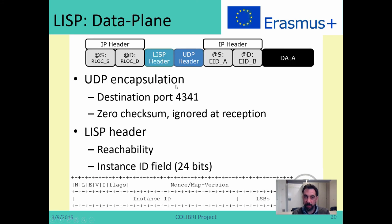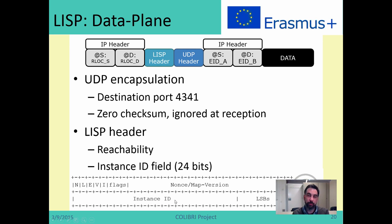LISP packets use UDP encapsulation on destination port 4341. Why UDP? Because it works very well with firewalls and it is a connectionless protocol. It also uses a zero checksum so you don't need to compute the UDP header checksum, because there are already checksums on the IP and TCP headers to protect the packet. The LISP header contains reserved information and flags. It also contains something called the Instance ID — a 24-bit field which can be used for isolating traffic or for virtual routers, VLANs, and similar applications.